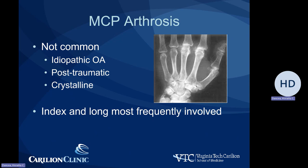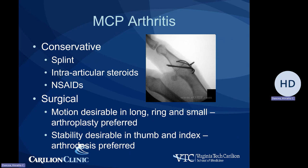Moving further proximally to the MP joint — this is relatively uncommon, probably the least common of those three joints. This joint is more commonly involved in idiopathic arthritis as well as inflammatory autoimmune arthritis or crystalline arthritis like gout or pseudogout. The index and middle fingers are most frequently involved. Treatment again starts with splinting, which improves pain short-term but may create further stiffness. Intra-articular steroid injection and oral and topical anti-inflammatories are also used.